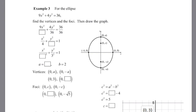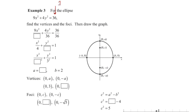Let's look at finding for the ellipse 9x squared plus 4y squared equals 36: find the vertices and the foci, then draw the graph. I know I need to put this into standard form — I need a value in my denominator. So I'm going to multiply everything by 1/36, because I need this value to be 1 and these to be divided by something. Multiplying everything by 1/36, I'll have 9x squared over 36 plus 4y squared over 36 equals 36 over 36. Simplifying, I have x squared over 4 plus y squared over 9 equals 1.